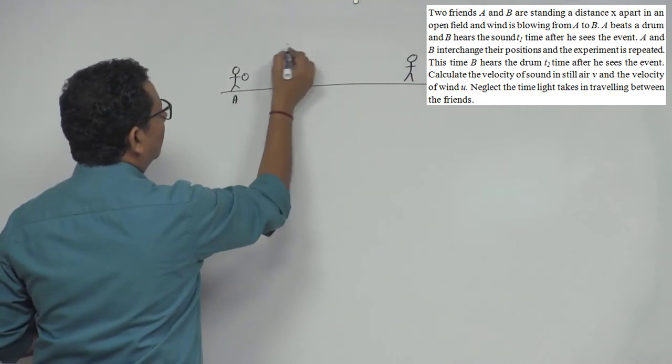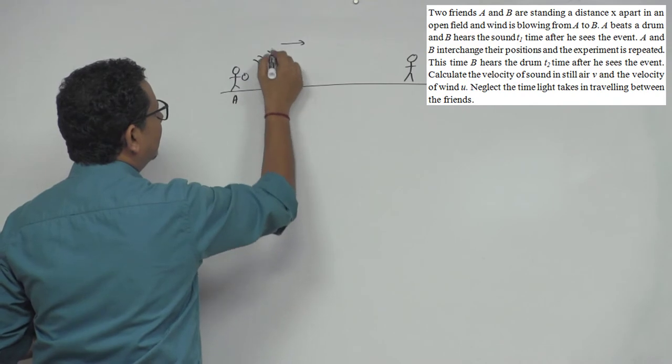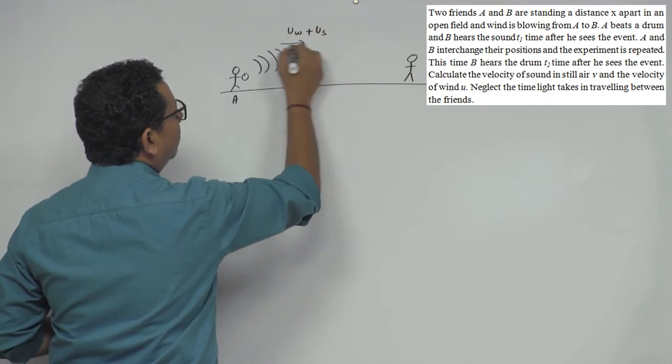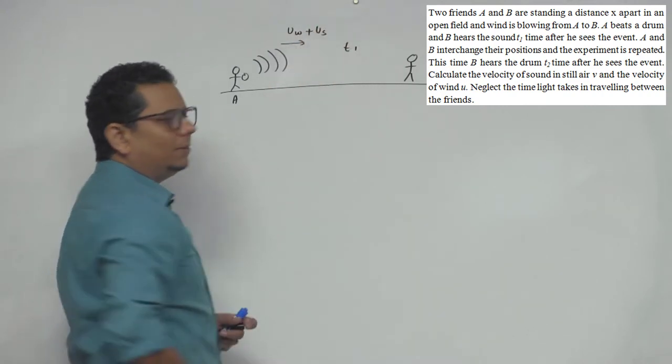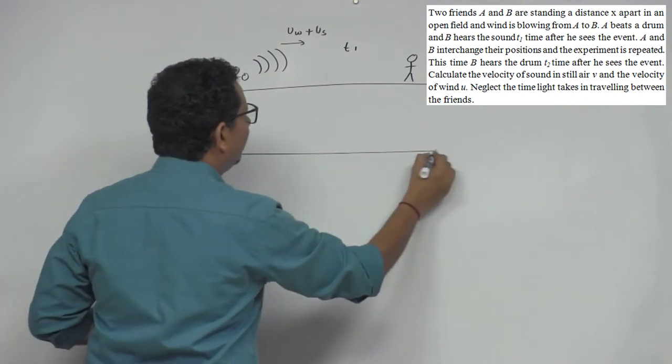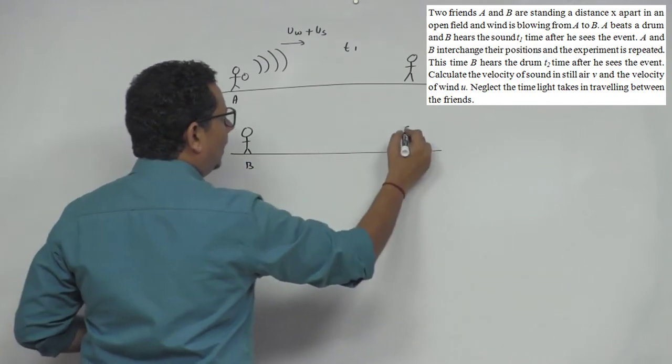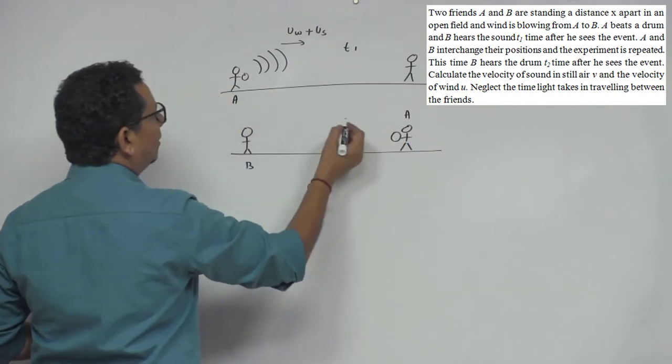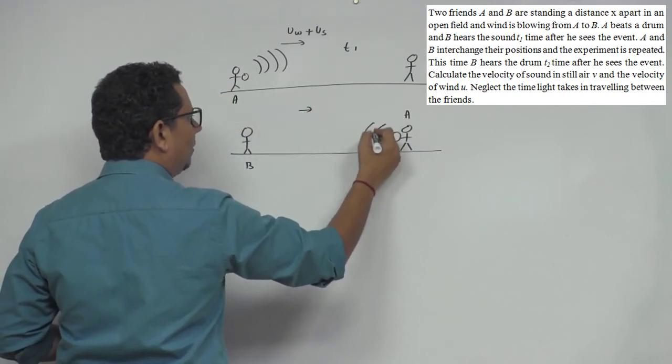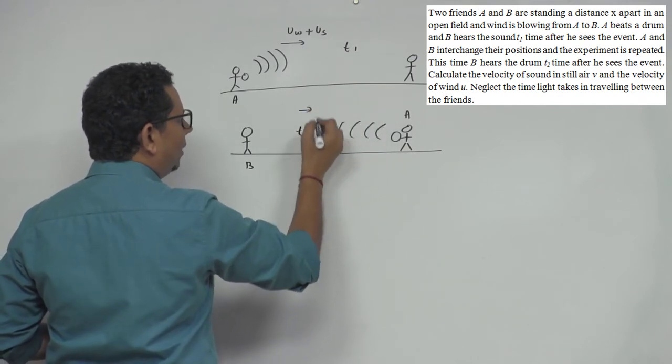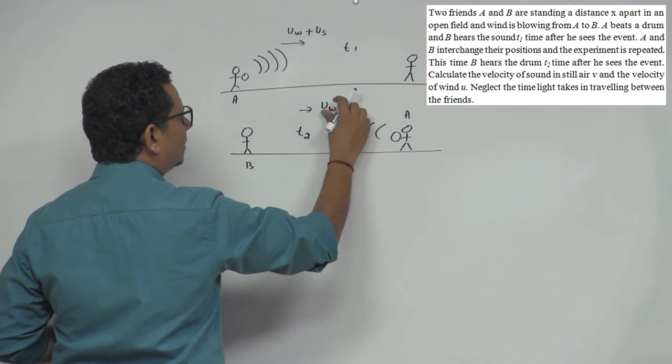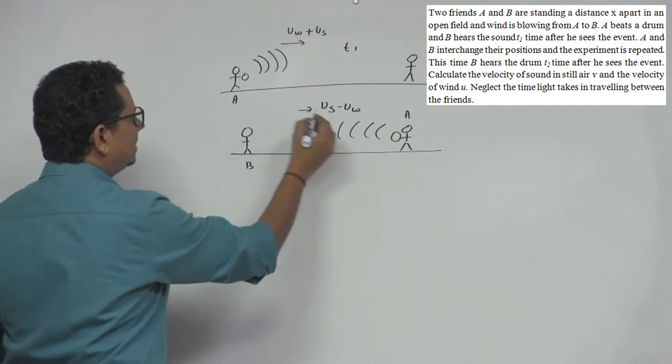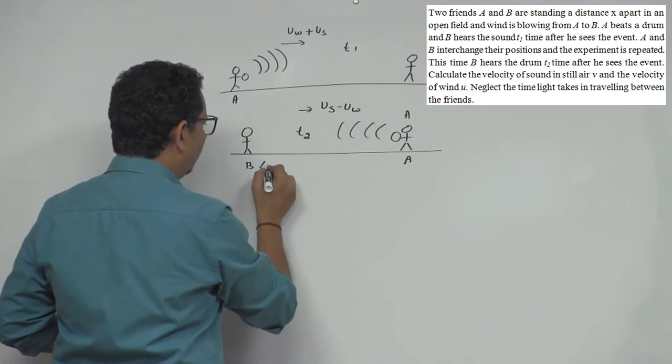The velocity is velocity of wind plus velocity of sound. The sound will travel, and time taken is T1. In the second scenario, when B is playing the drum, the wind velocity is opposite. Here the sound will travel, in this case time is T2, and the velocity is velocity of sound minus velocity of wind. This is the distance between A and B, and the distance is X.